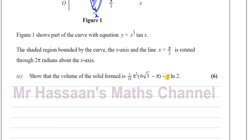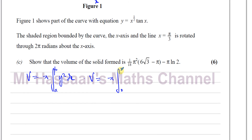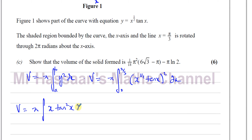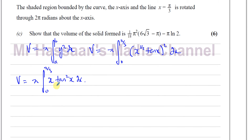We can now apply that formula. The volume equals π times the integral of y² dx between the limits 0 and π/3. Substituting y = x^(1/2) tan x, squaring gives x tan²x. So V = π ∫₀^{π/3} x tan²x dx. This is the integral we need to evaluate to find the volume of the solid.